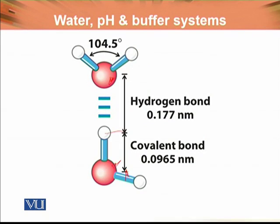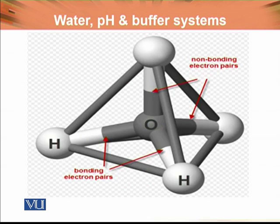The bonding between oxygen and hydrogen within a water molecule is due to electron sharing — this is a covalent bond. However, due to partial electronegativity on the oxygen (delta negative) and delta positive on the hydrogen, a bond forms between the oxygen of one molecule and the hydrogen of another through electrostatic interactions. This is known as the hydrogen bond. This is the tetrahedral structure — the oxygen is bonded to four neighboring water molecules.